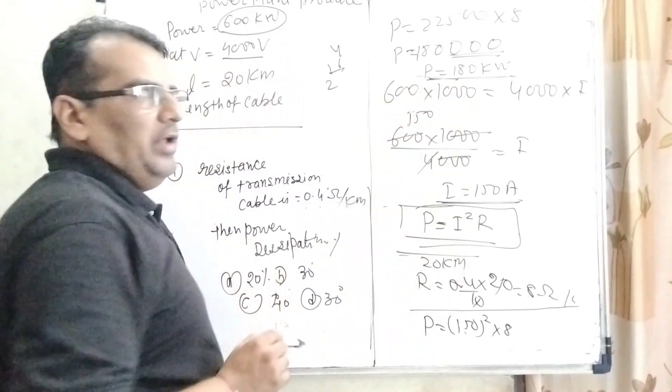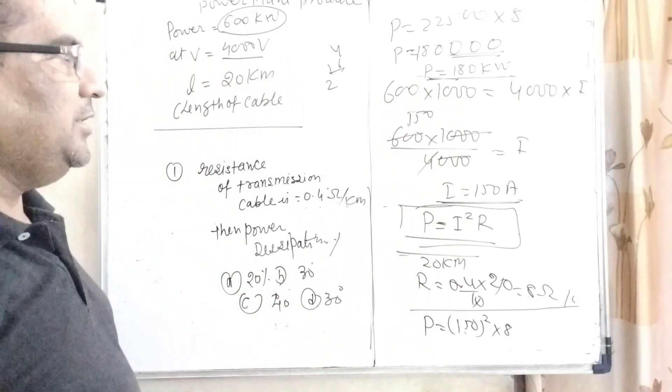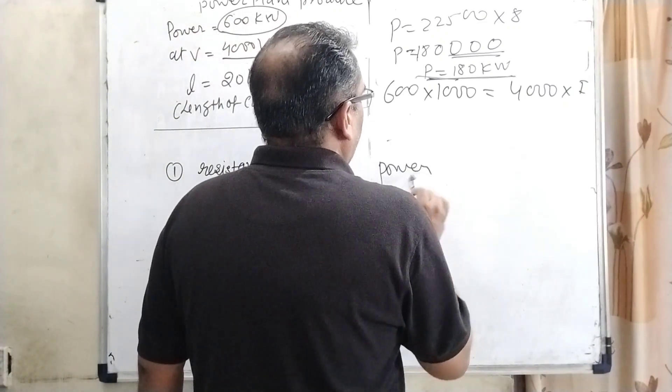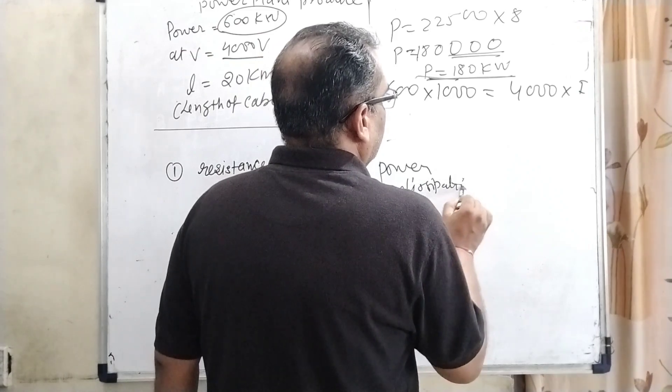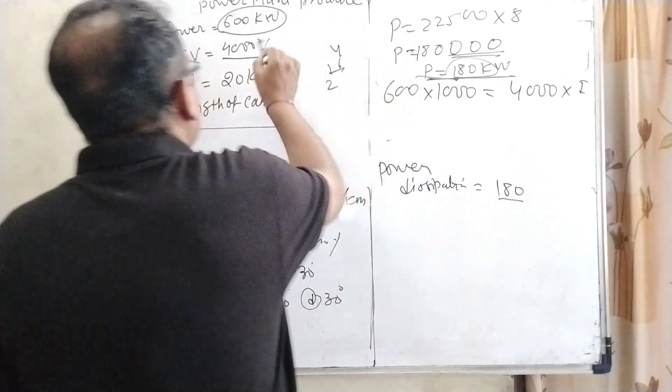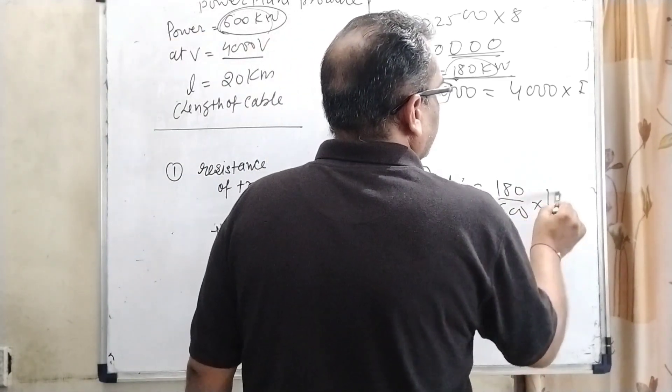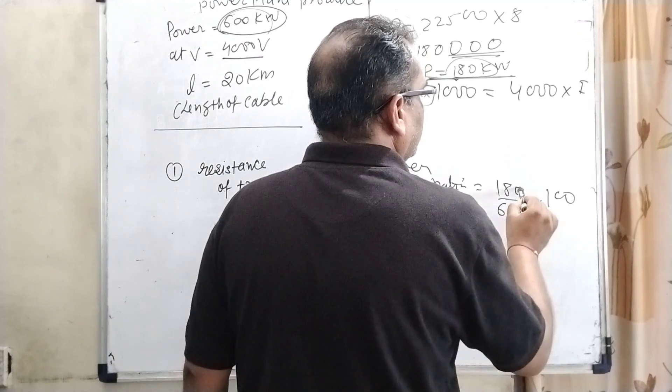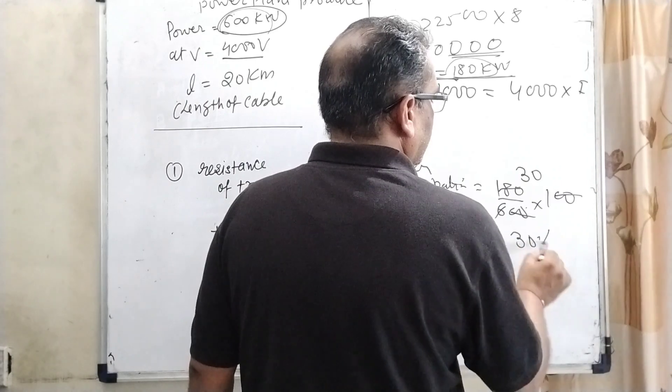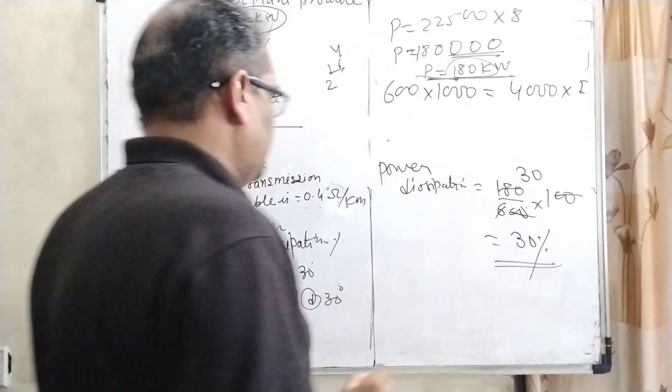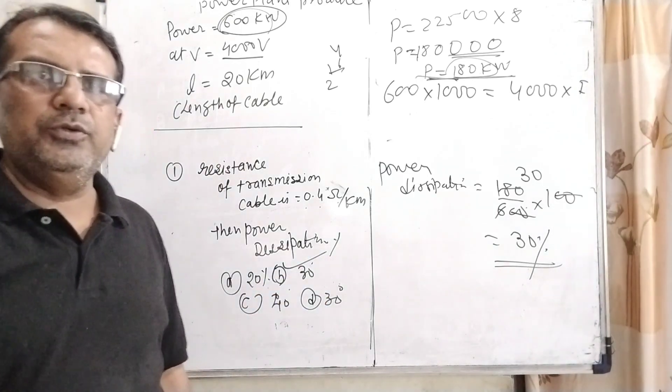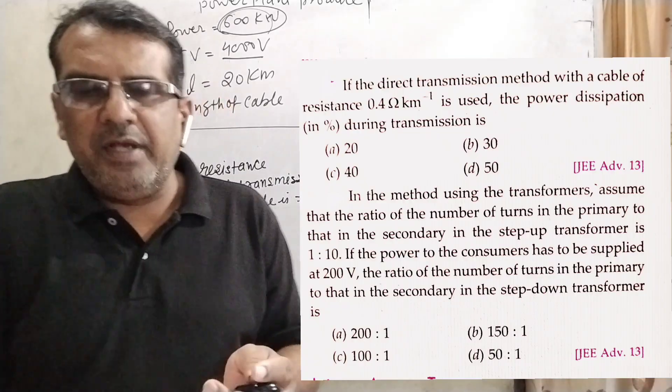So now we have to find out the percentage power dissipations. The percentage of power dissipation: consumed power is 180, produced power 600 into percentage. That is 30%. So here power dissipation is 30%. Here B option is correct. I hope you understood this question. This question based on this paragraph.